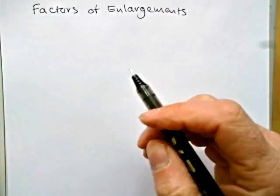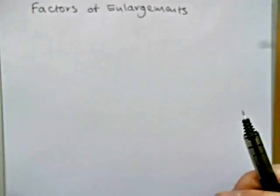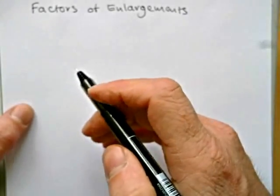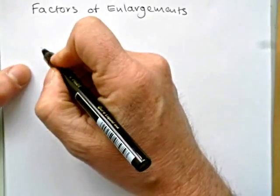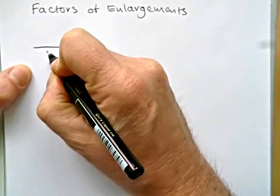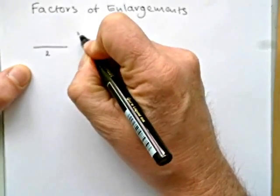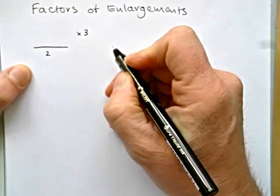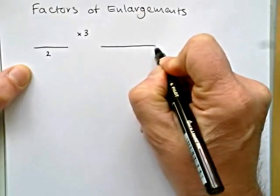In this short video I'm going to show you how enlargement factors affect area and volume. Now if I have a dimension and say it's a length that's 2 and I apply an enlargement factor of 3, the new length will become 6.